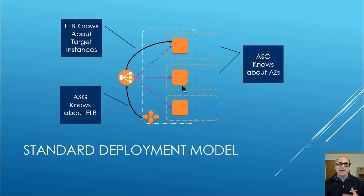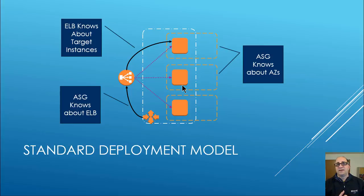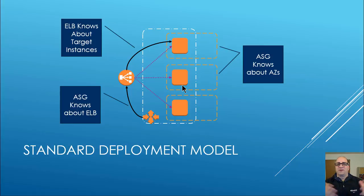The ELB itself knows about target instances — it knows what port and IP address it's forwarding to, but it doesn't know how they're provisioned or how they're related. You could actually, though it would be a bad idea, put different apps behind the same ELB. It would have no idea what's happening.